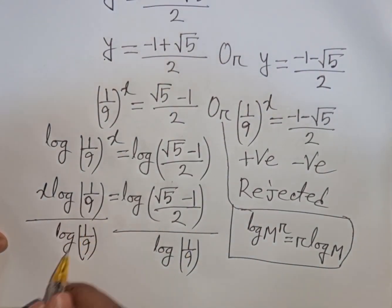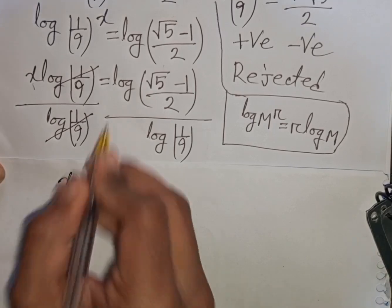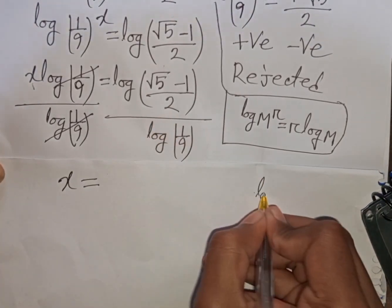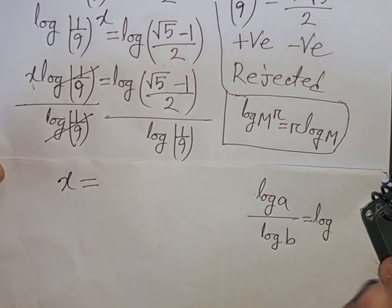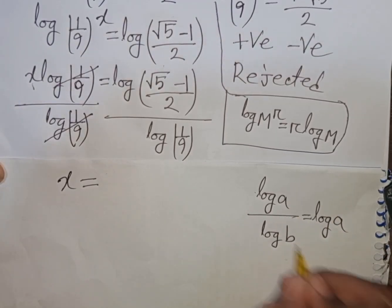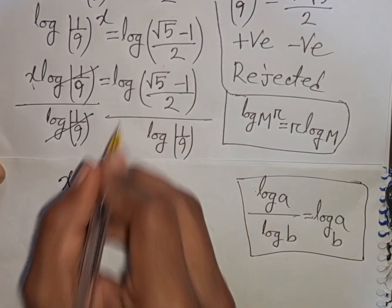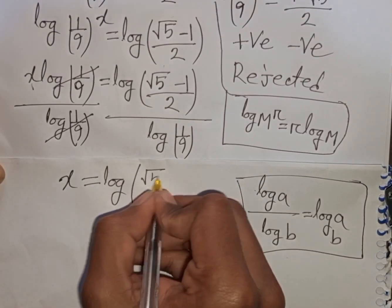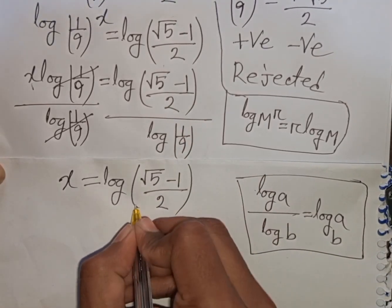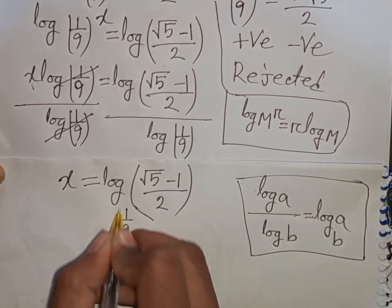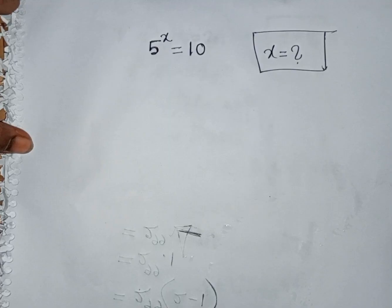This log(1/9) divided by log(1/9) will be cancelled. So x equals log of (square root of 5 minus 1) divided by 2, divided by log(1/9). Applying the formula log a divided by log b equals log a base b, we get x equals log base (1/9) of (square root of 5 minus 1) over 2. This is the final answer for the first problem.